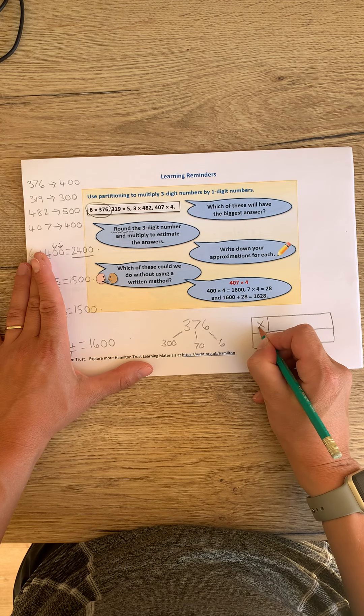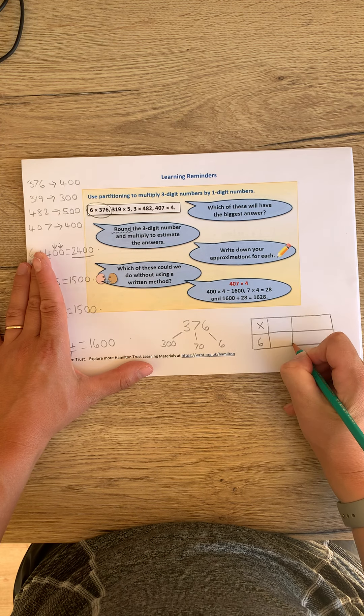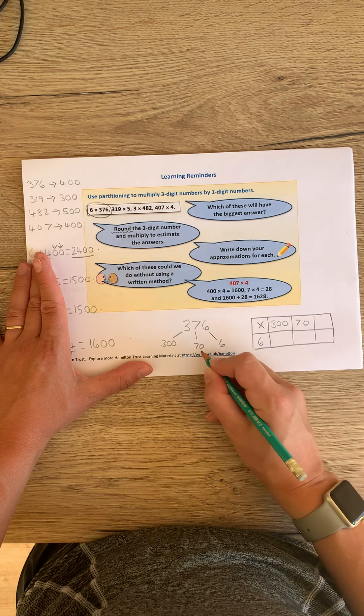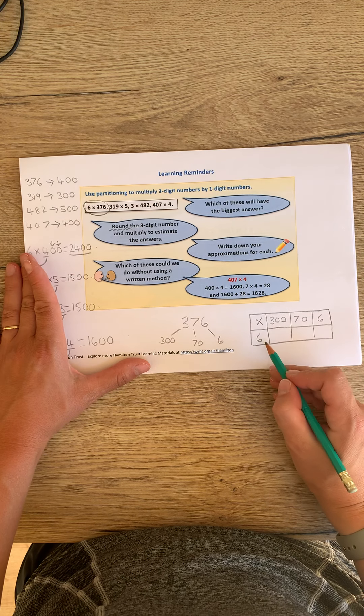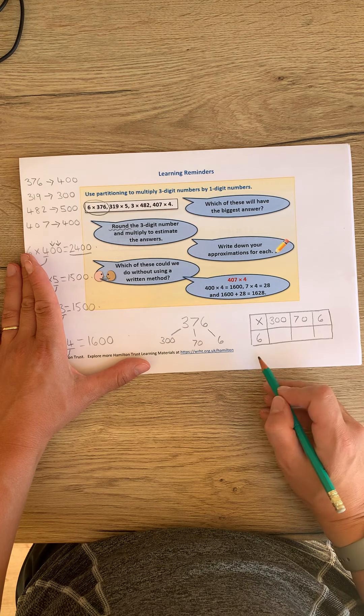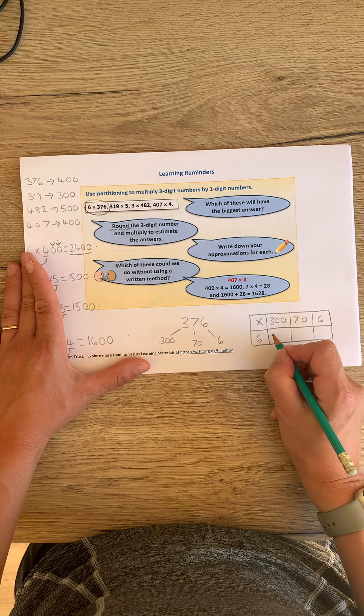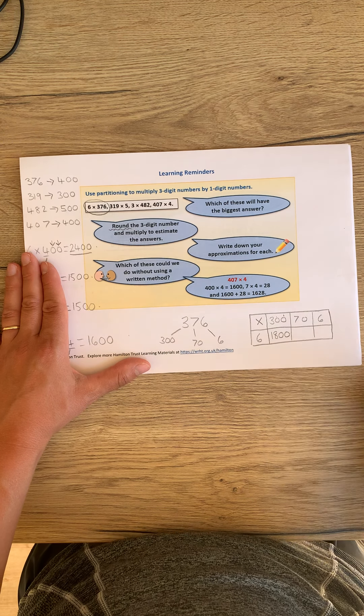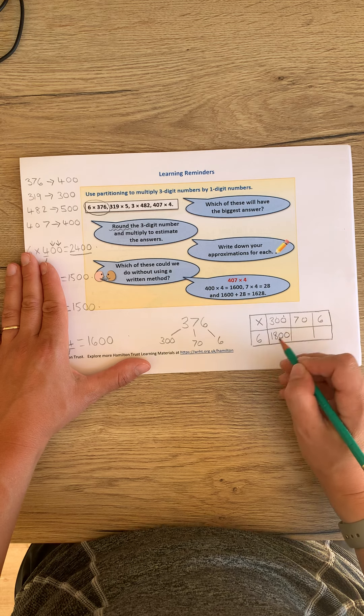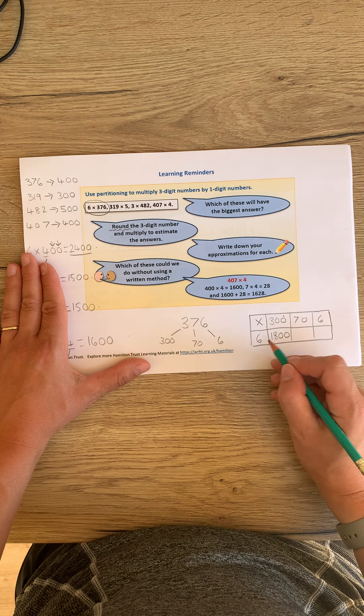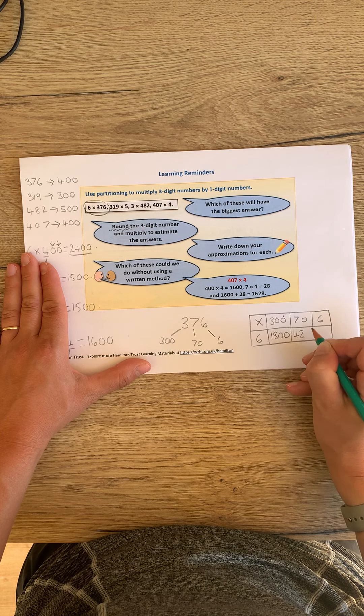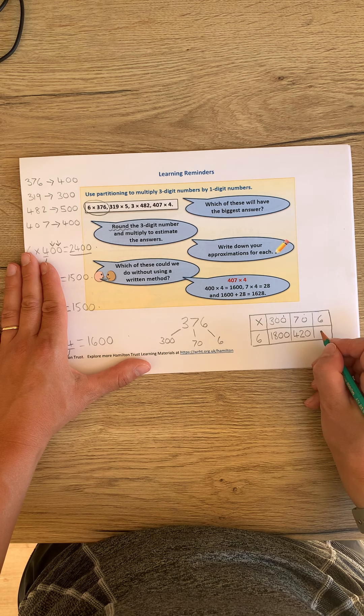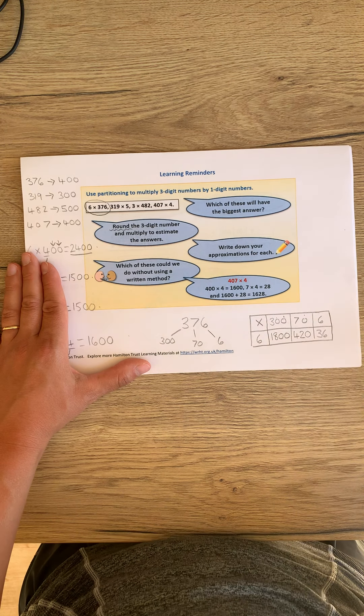We're multiplying by 6. So my 6 goes here. And my 300, my 70, and my 6 go here. So first of all, 6 multiplied by 300. I know that 6 multiplied by 3 is 18. Two place value holders gives us 1800. 6 multiplied by 7, well, I know 6 6s are 36, so 6 7s must be 42. One place value holder, multiply my answer by 10, so 420. And finally, oh, here we go again, my favourite multiplication, 6 6s are 36.